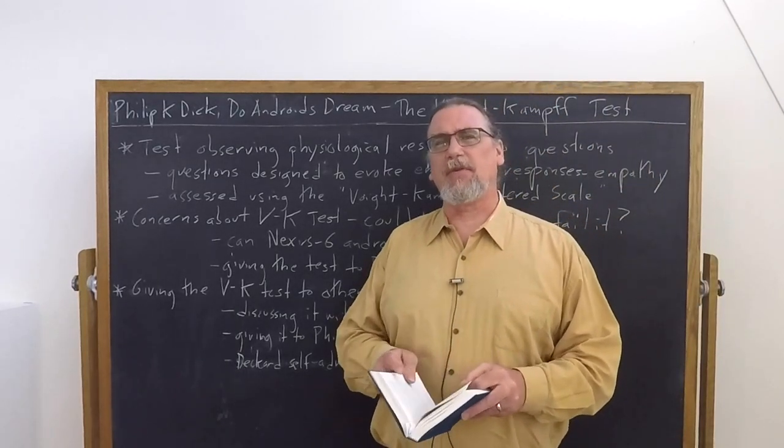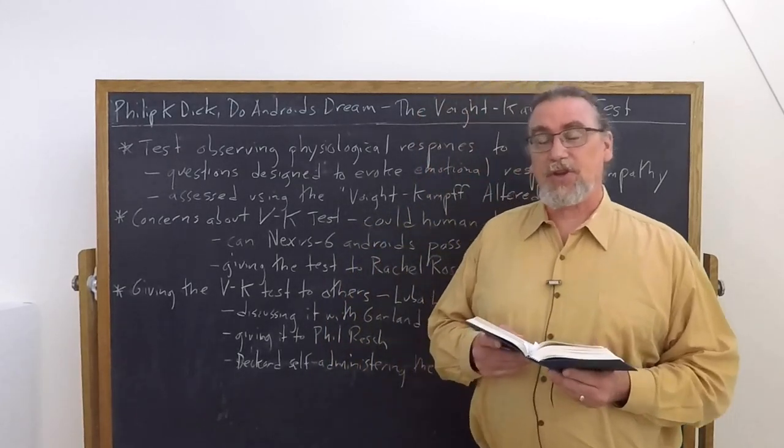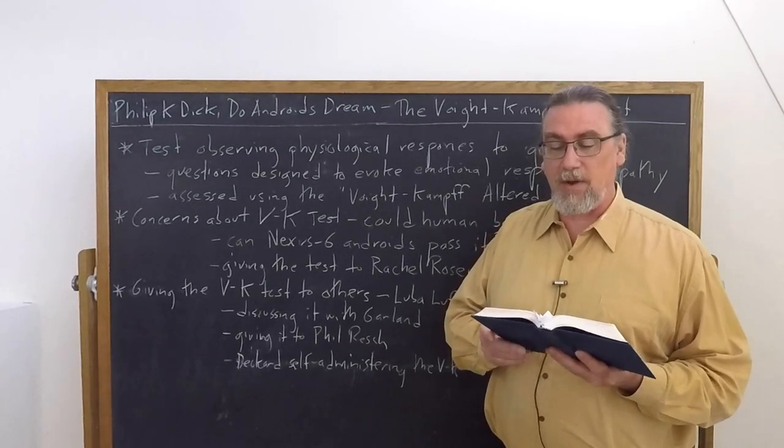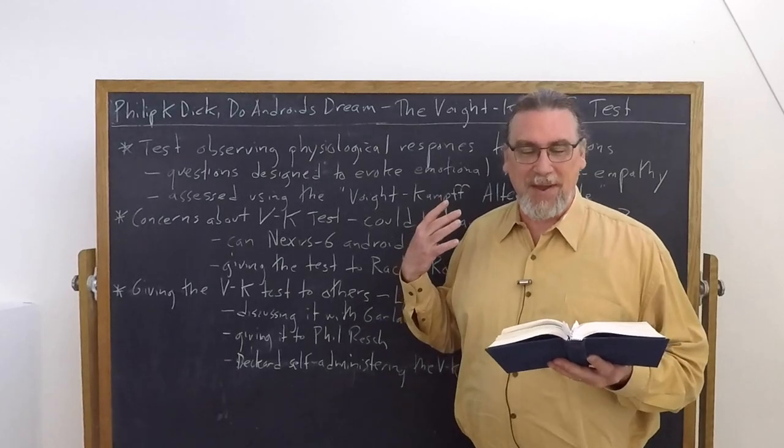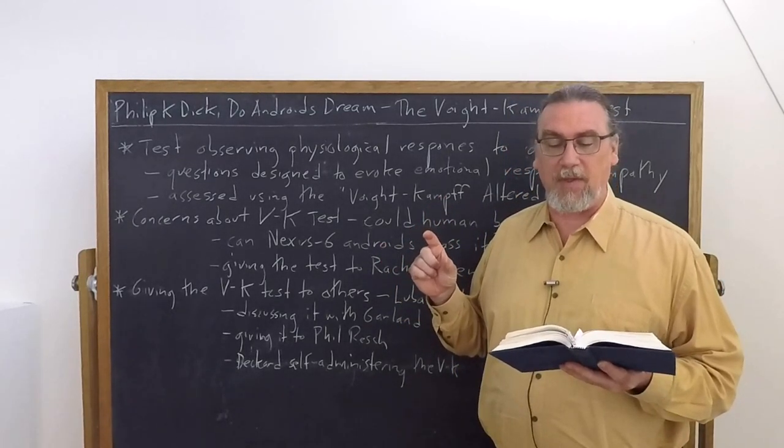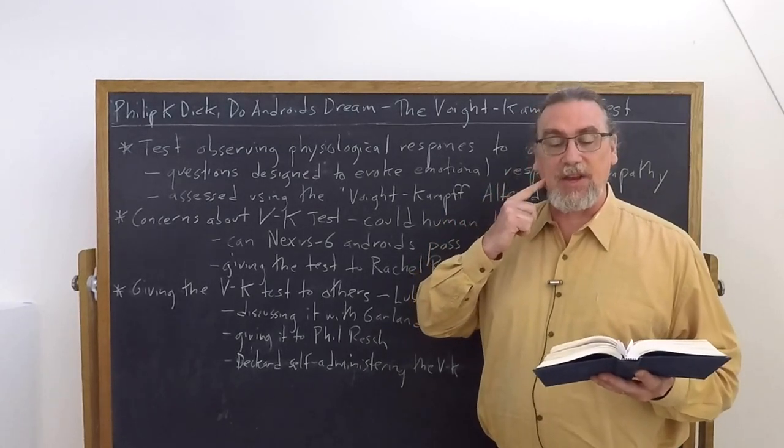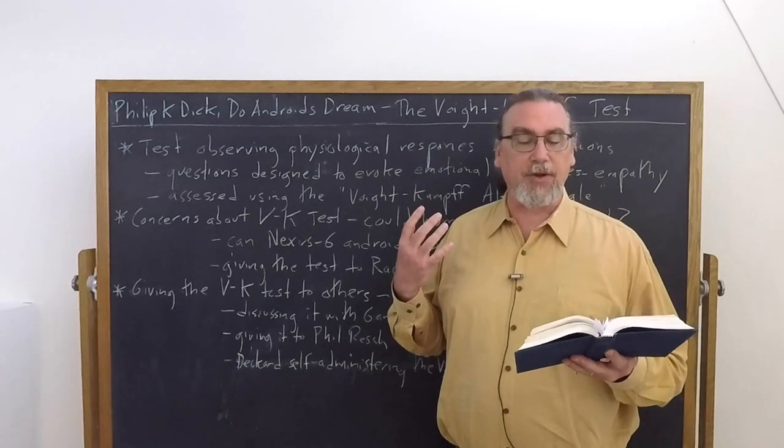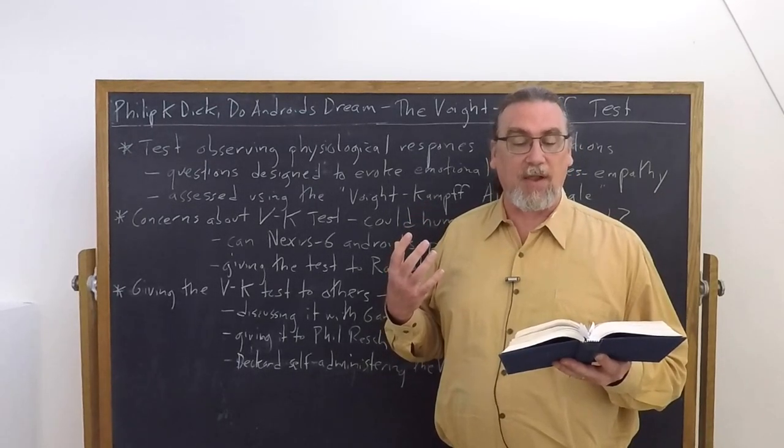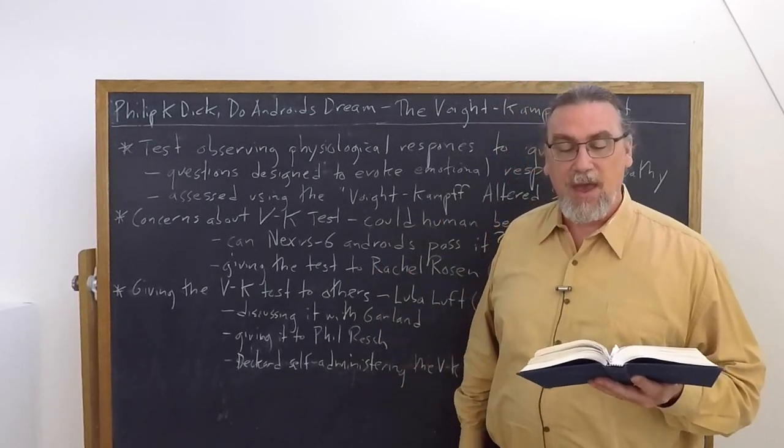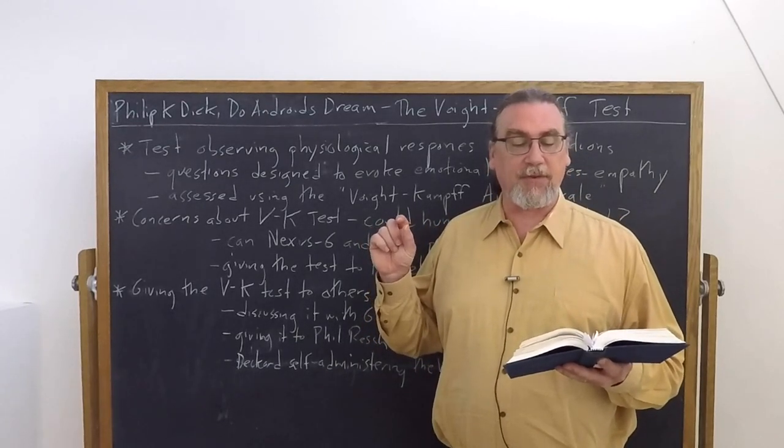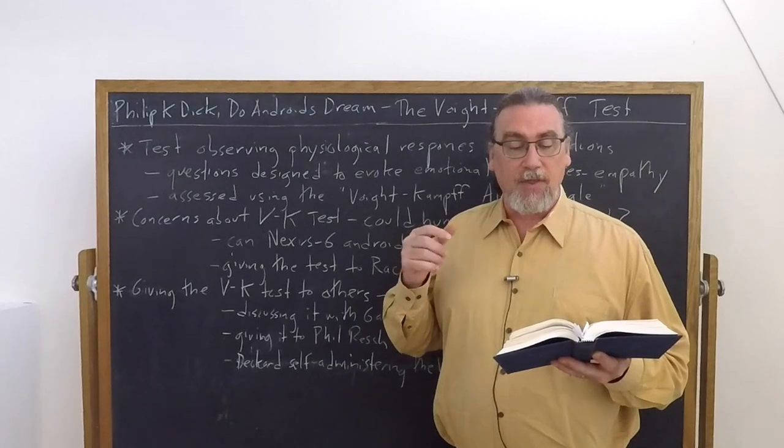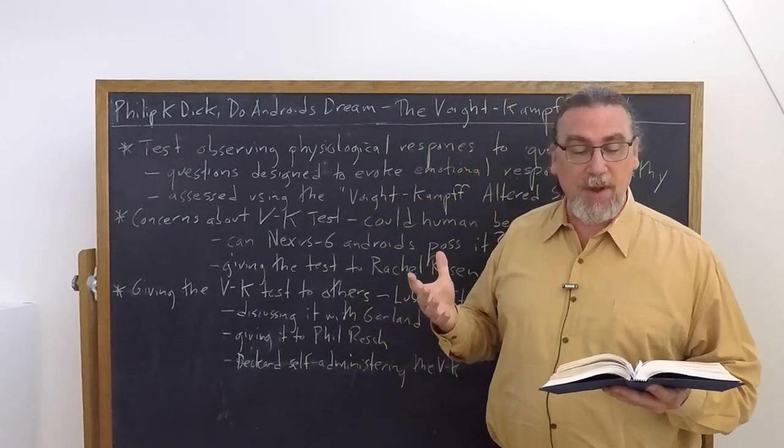It's measuring the kinds of responses. And we see this discussed at the end of chapter four, where there's a little bit of exposition. Rachel says, I've never seen an empathy test being administered. What are these things that you have there? Rick said this, he held up the flat adhesive disc with its trailing wires, measures capillary dilation in the facial area. We know this to be a primary autonomic response, the so-called shame or blushing reaction to a morally shocking stimulus. It can't be controlled voluntarily, as can skin conductivity, respiration, and cardiac rate. He showed her the other instrument, a pencil beam light. This records fluctuations of tension within the eye muscles. Simultaneous with the blush phenomenon.